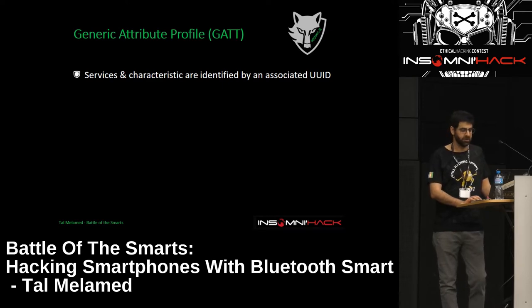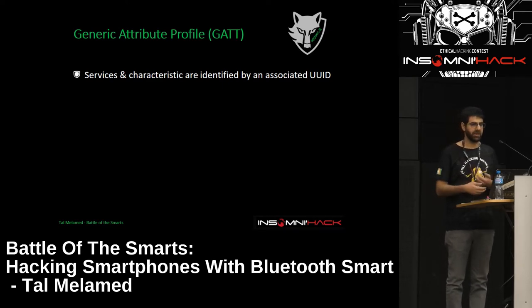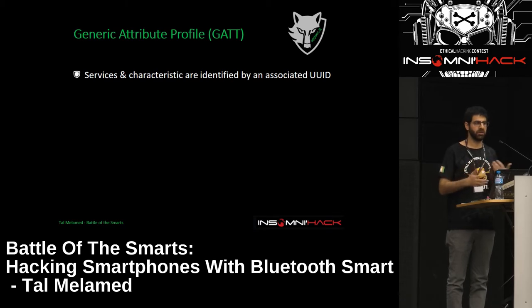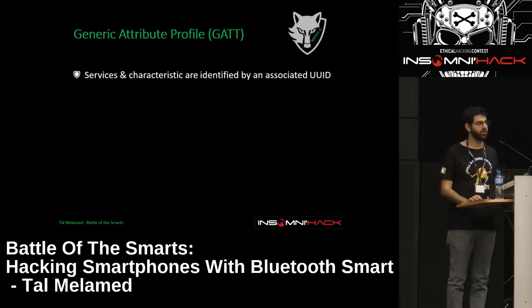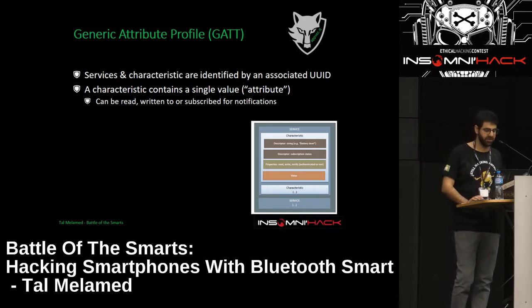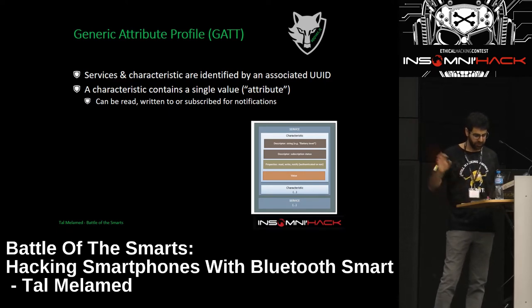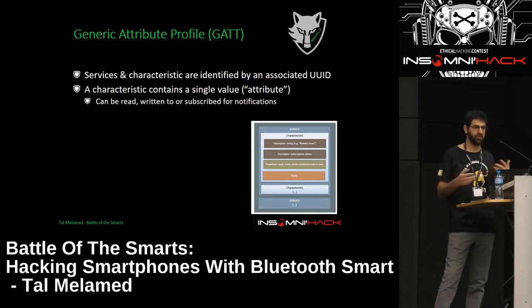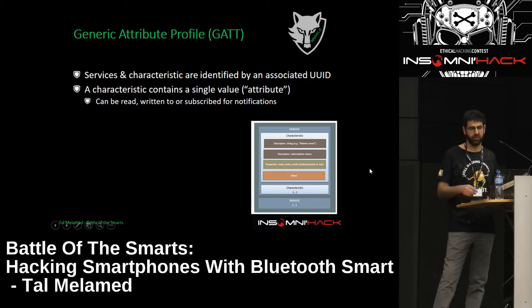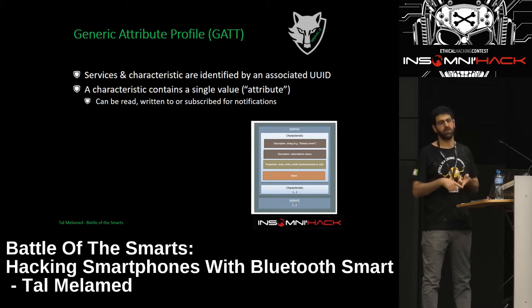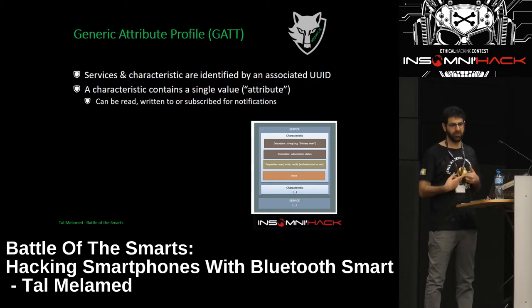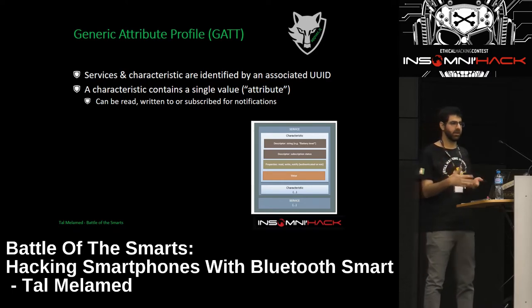If it's a smartwatch with features like email notifications, the app needs to communicate with it. The app knows what type of data to send and which service to connect to — all defined in the GATT characteristics. You have a service with a description: is it a battery service, a notification service, et cetera? Properties include: read from it, write to it, and register to it — called notification, where you register to a service and keep getting information.